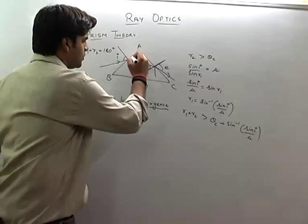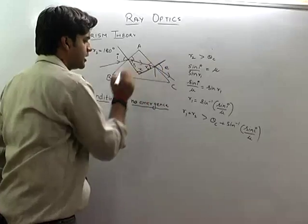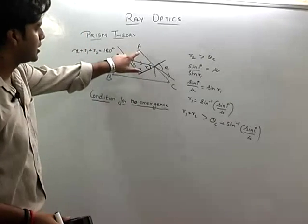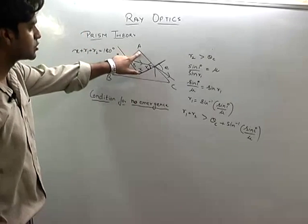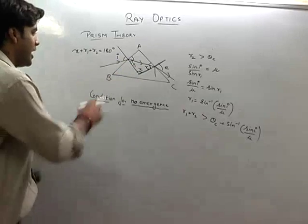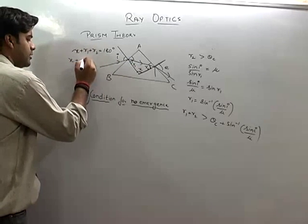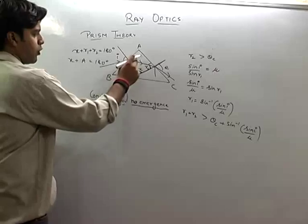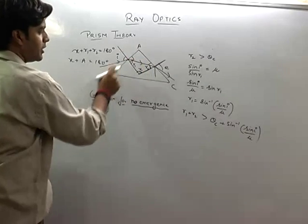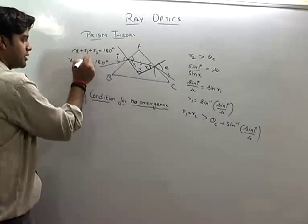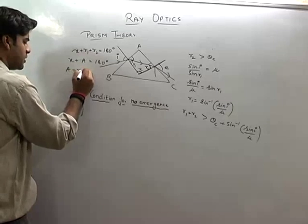Because this is 90 and this is 90, that means x plus angle, this is called the angle of prism, x plus angle a should be equal to 180 degree. Because quadrilateral, this is 90 and this is 90. The other two are 180 degree. That means that a is equal to r1 plus r2.